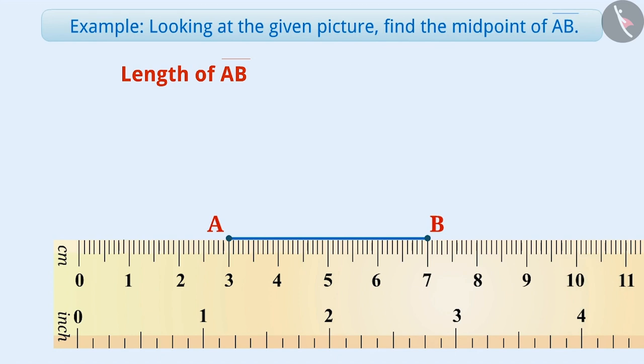Let me explain this. Here, the starting point is 3 and the ending point is 7. The distance between 3 and 7 is 4 cm. Therefore, we can say that the length of line segment AB is 4 cm.